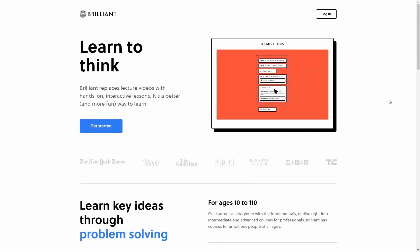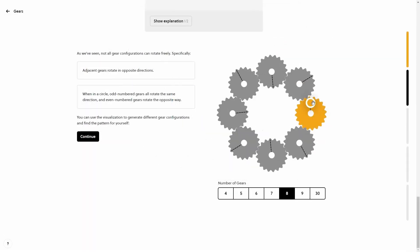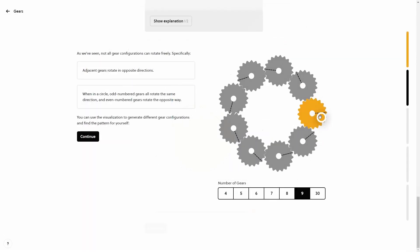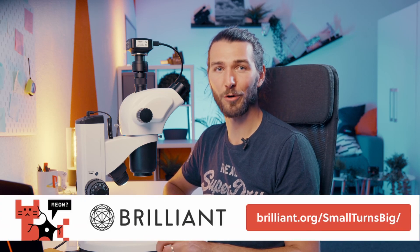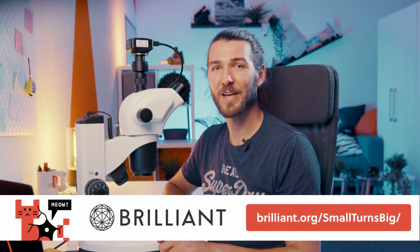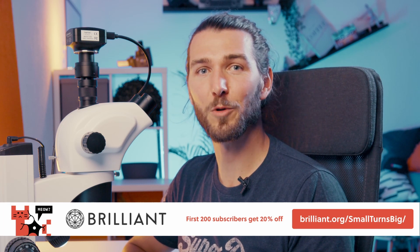If this got you interested in learning STEM topics to make improvements in your life, then I recommend you check out Brilliant to improve your problem solving and critical thinking skills. Their lessons are interactive so that you are applying what you've learned and understanding the why of it instead of just memorizing formulas to get by. To supercharge your learning, go to brilliant.org/smallturnsbig and the first 200 signups get 20% off the annual premium subscription.